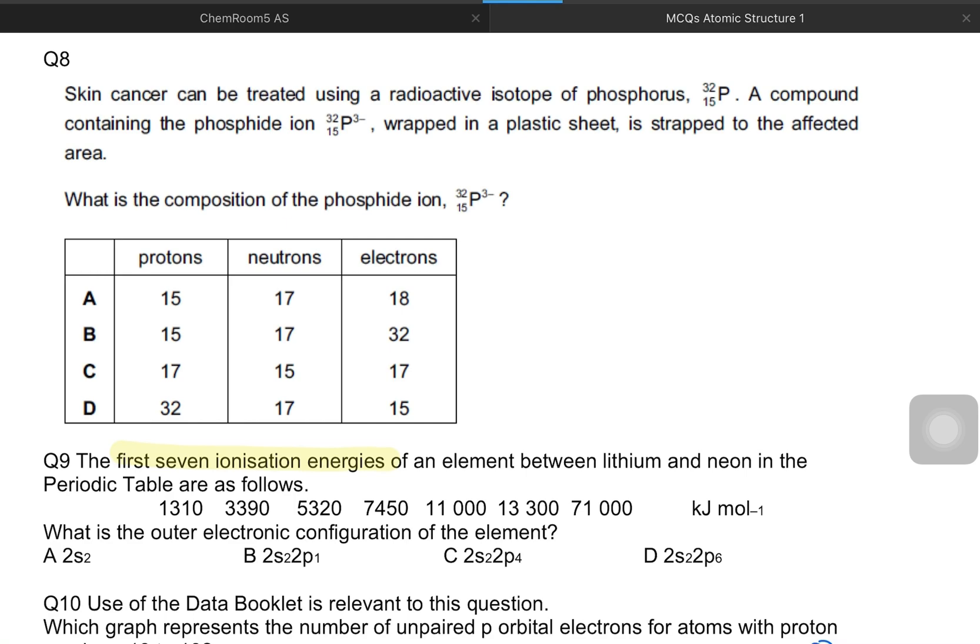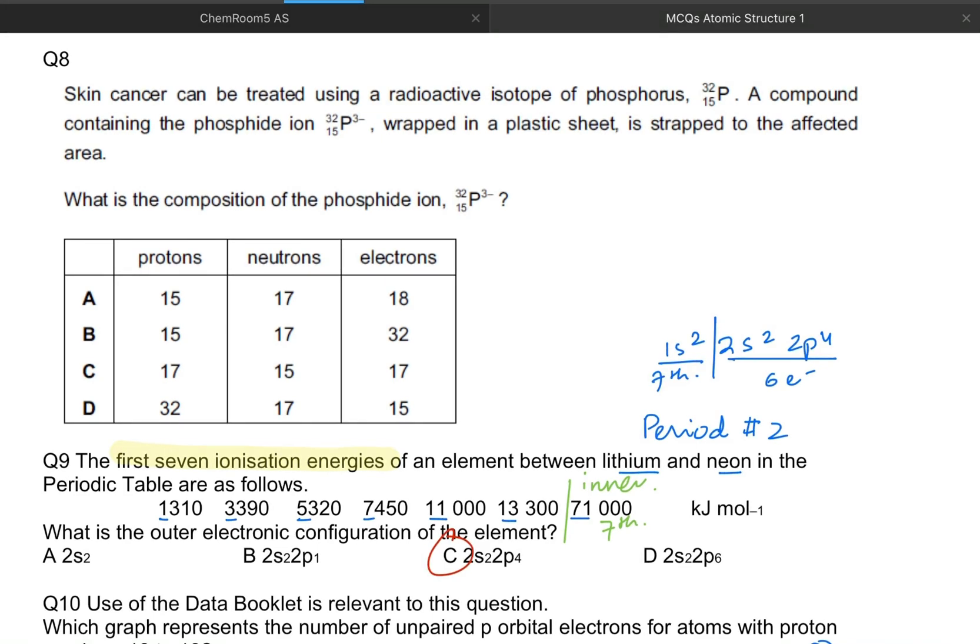Let's do question nine. The first seven ionization energies of an element between lithium and neon, which means period two, lithium and till neon are in period two. In the periodic table are as follows: something thirteen hundred, then three thousand, five thousand, seven thousand, eleven thousand, thirteen thousand and whoa seventy one thousand. There's a really big jump from thirteen thousand three hundred to seventy one thousand. It means the first six electrons are having lower ionization energies than the seventh one, which means seventh ionization energy is for an inner electron. And that is why the answer for this one should be group number six. 1s2, 2s2, 2p4. Now the seventh electron is inner shell, but the valence configuration is 2s2, 2p4. So this element belongs to group six. Option C is the right answer.